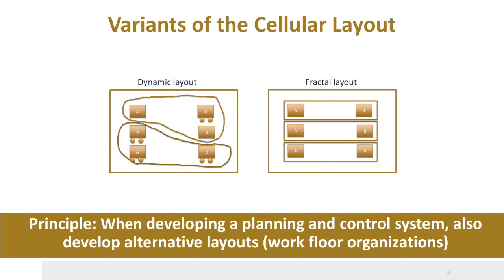The team is responsible for the timely manufacturing of a set of orders. It is not always possible, though, to create a stable cellular layout. The mix of products may change all the time, which may cause an imbalance between the cells. Some machines may be overutilized in one cell, while the same machines are underutilized in another. To overcome this situation, there are several variants of the cellular system possible.